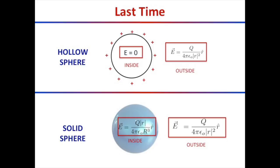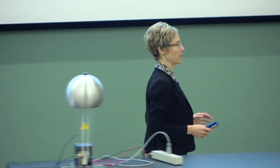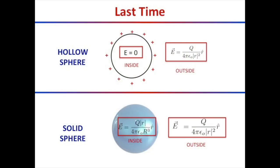Last time we talked about spheres. We talked about what happens if we have a hollow sphere of charge and what's the electric field coming off of the hollow sphere of charge. And we talked about the solid sphere of charge and what's the electric field due to a solid sphere of charge. The hollow sphere just means that there are charges distributed on the shell of the sphere, but not in the inside. And it turned out that inside, the electric field cancels.